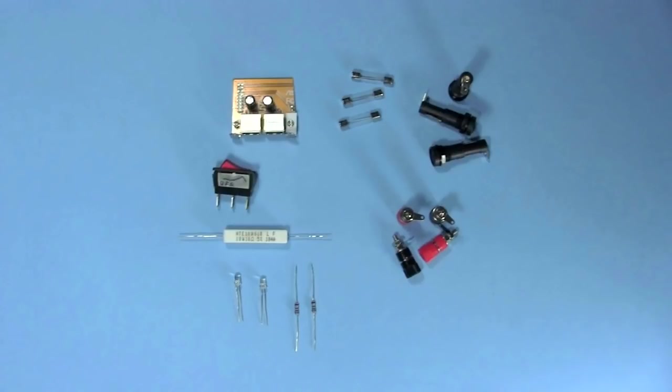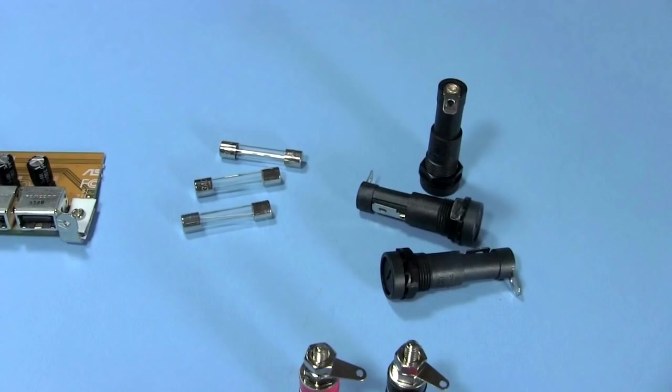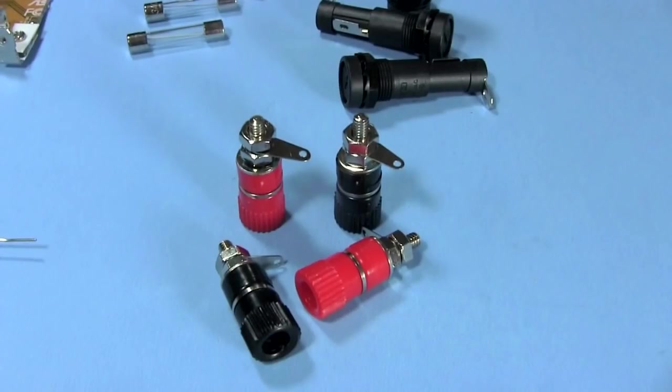Here are all the parts. The ones we haven't seen so far are the fuse holders and fuses and the binding posts, some of which I'll paint a different color.